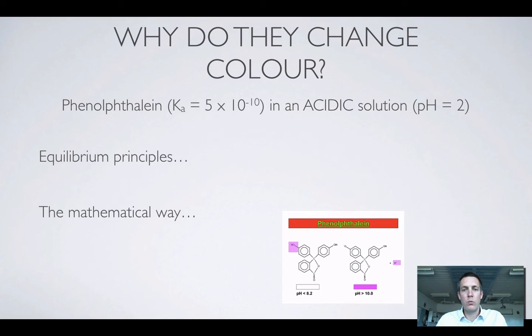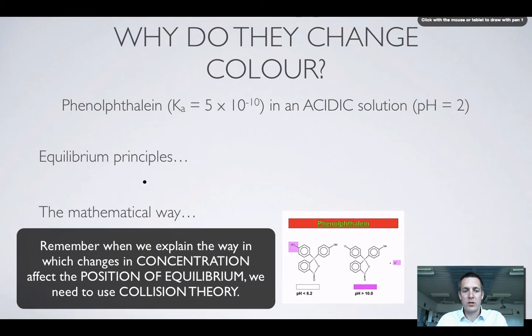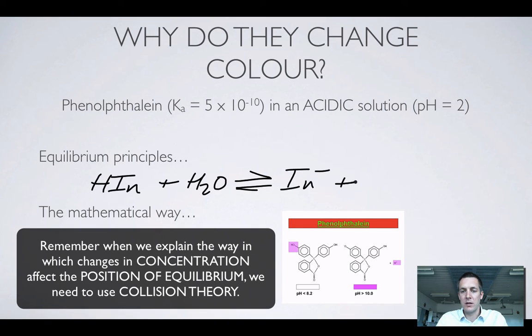So now let's have a look at why they change colour. In terms of equilibrium principles we can explain what's going on by talking about which way the equilibrium moves. Let's see what happens if we write the equilibrium for this reaction. So HIn plus H2O turning into In- and H3O+.